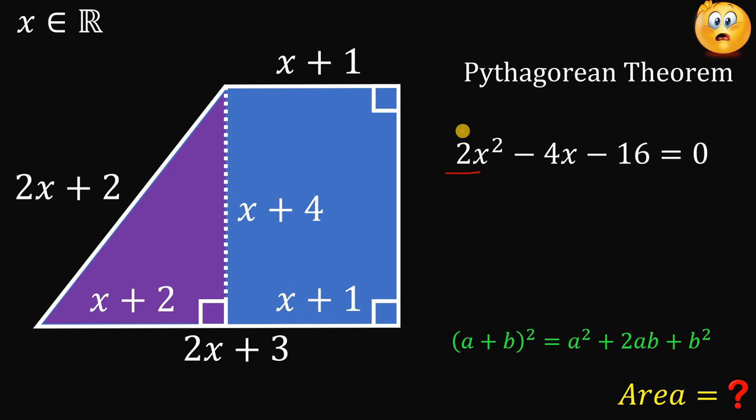Next, take note that the numerical coefficients are divisible by 2. So, why not divide all of these terms by 2 to simplify this equation? If we do that, we get x squared minus 2x minus 8. And this quadratic equation is not hard to factor because if we factor this out, you get x minus 4 multiplied by x plus 2.